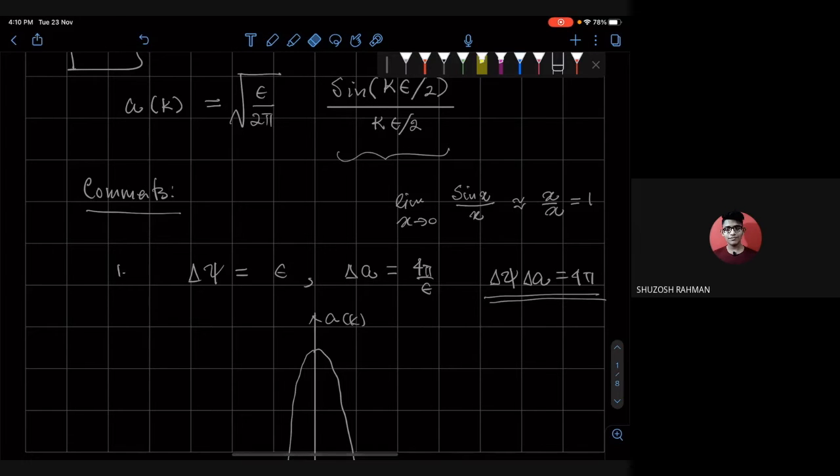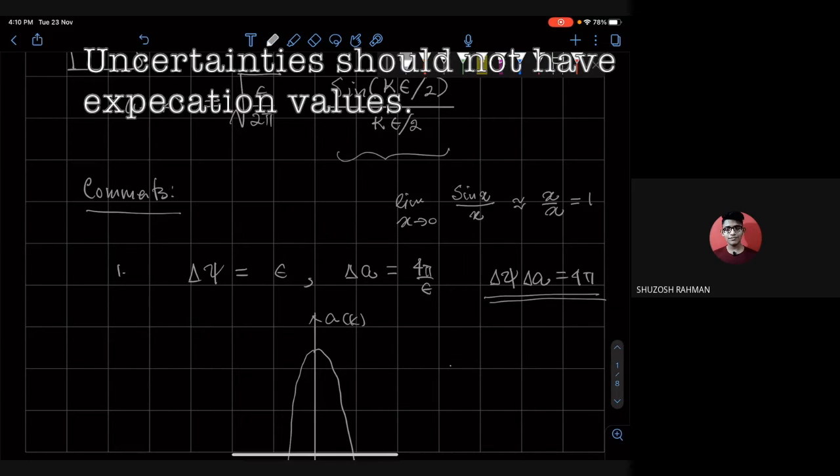Well, not expectation value but the uncertainty in position, which is defined by square—the expectation value of the operator X minus its average, squared, and taking its average and square root, right?